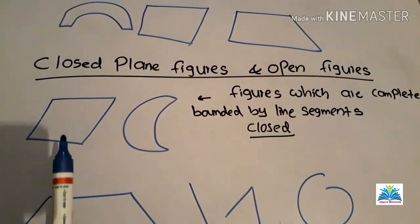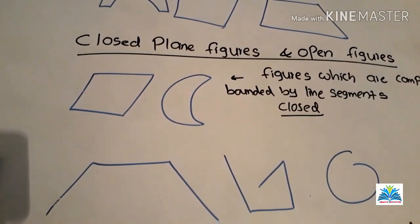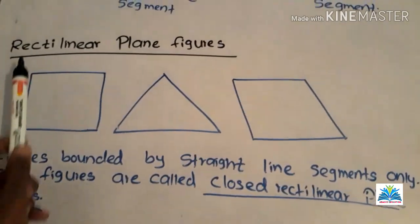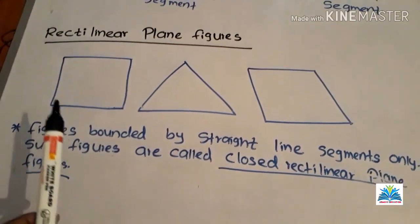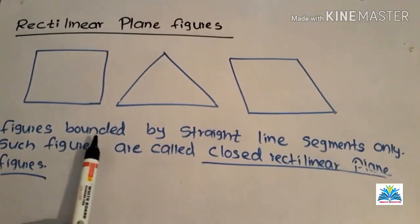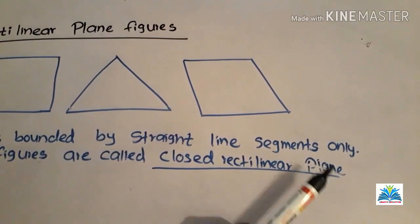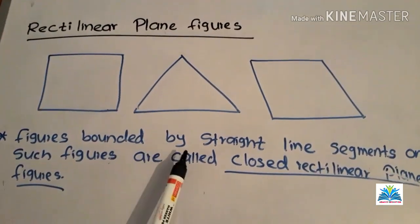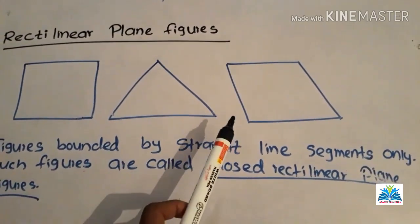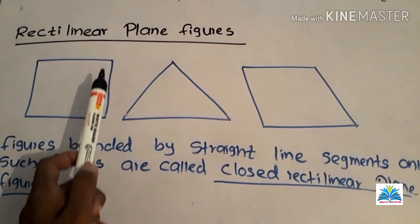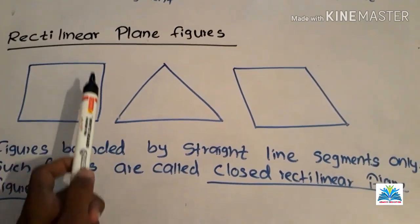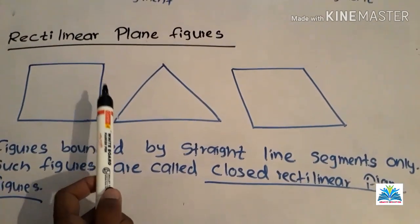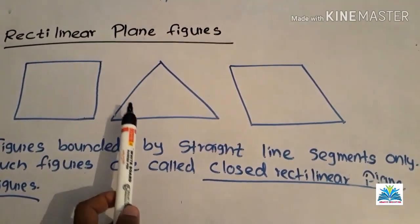Now we will go to the next part of our lesson: rectilinear plane figures. Rectilinear plane figures are figures bounded by straight line segments only. Such figures are called closed rectilinear plane figures. This type of plane figure is called rectilinear because it is only bounded by straight line segments — there are no curved line segments.